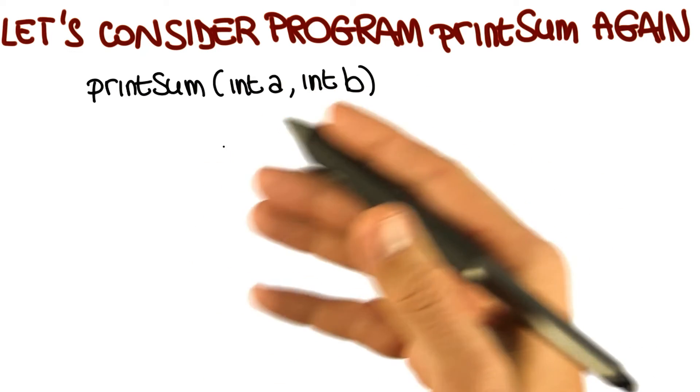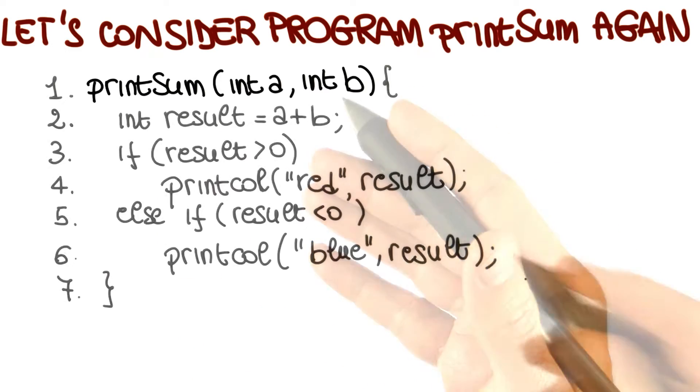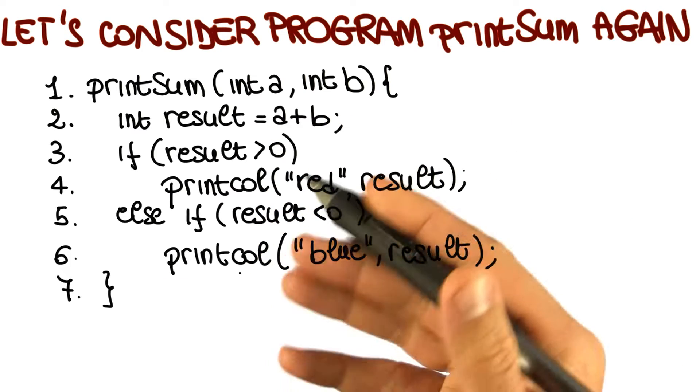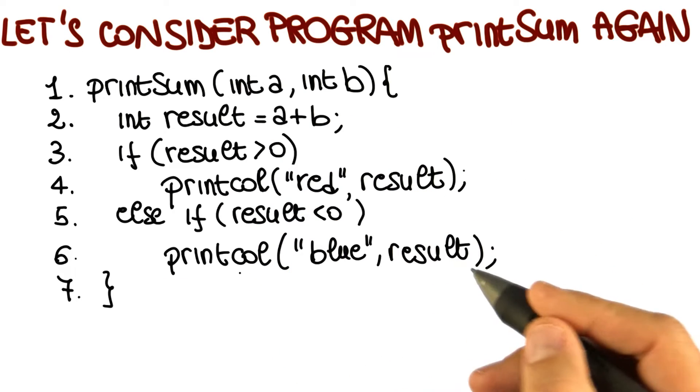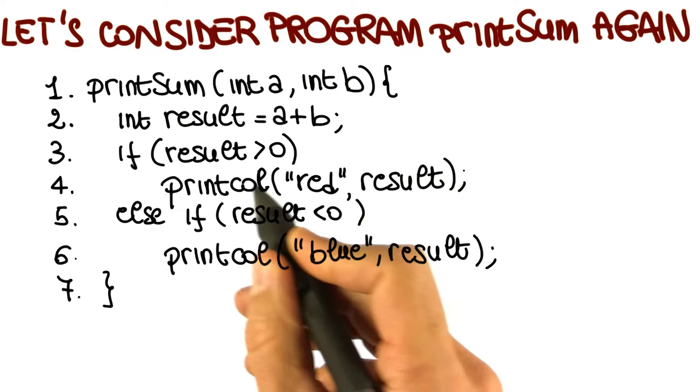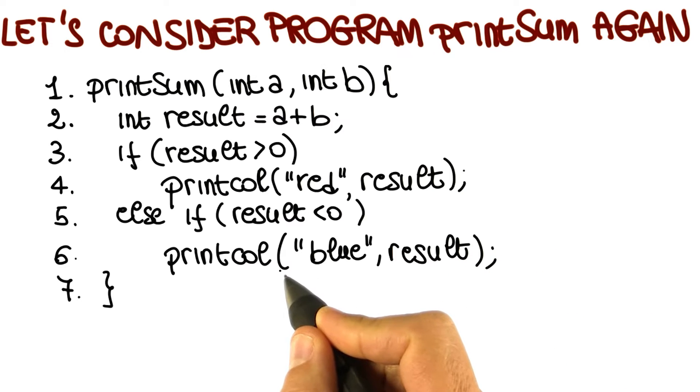When we're looking at this program in the context of black box testing, we didn't look at the implementation. But that's exactly what we're going to do now. We're going to open the box and look at how the code is implemented. As you can see, the programmer was kind of creative because instead of just adding the two numbers and printing them, he or she also decided to print them in a specific color depending on whether they were positive numbers or negative numbers.